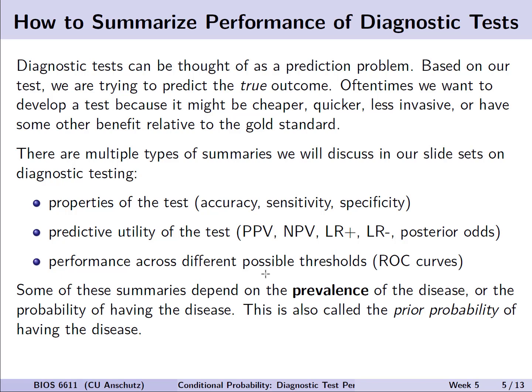We'll also see going through these slides that some of these summaries will depend on the prevalence of the disease, or in other words, we can think of it as the probability of having the disease, or what proportion of the population of interest has a condition. This is also called the prior probability of having the disease, because absent knowing anything else, if we know 10% of a population has a disease, for any random person, we would at least start with that as our guess that they might have the disease, a 10% chance.